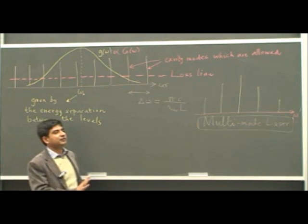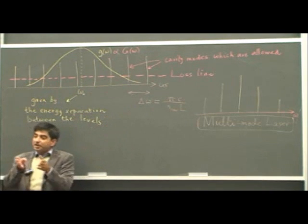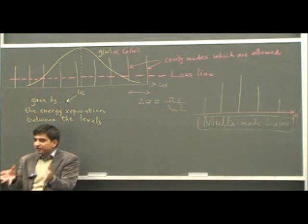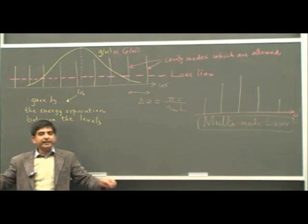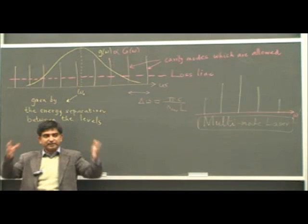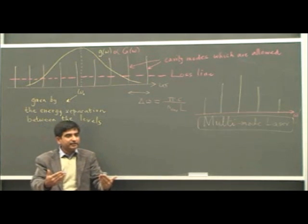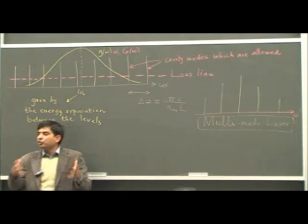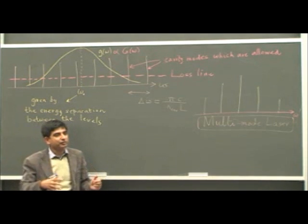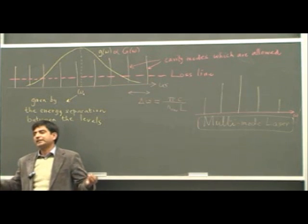So this is the operation of a multi-mode laser. To summarize: the cavity has some modes, then the line shape function selects some modes, then the gain function — the gain bandwidth — determines which modes are excited. Those modes for which gain exceeds losses will lase. This is the principle of operation of a multi-mode laser.